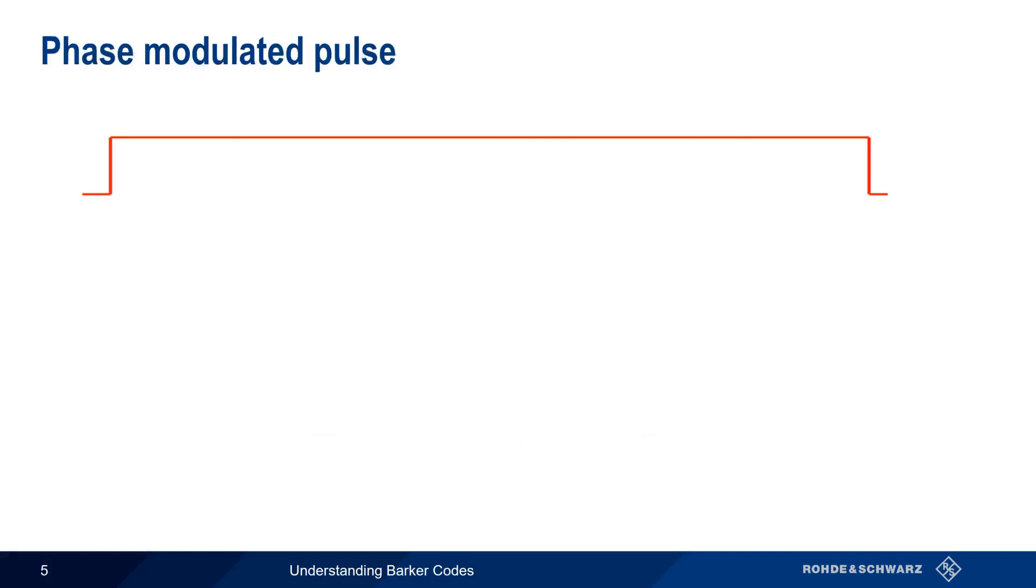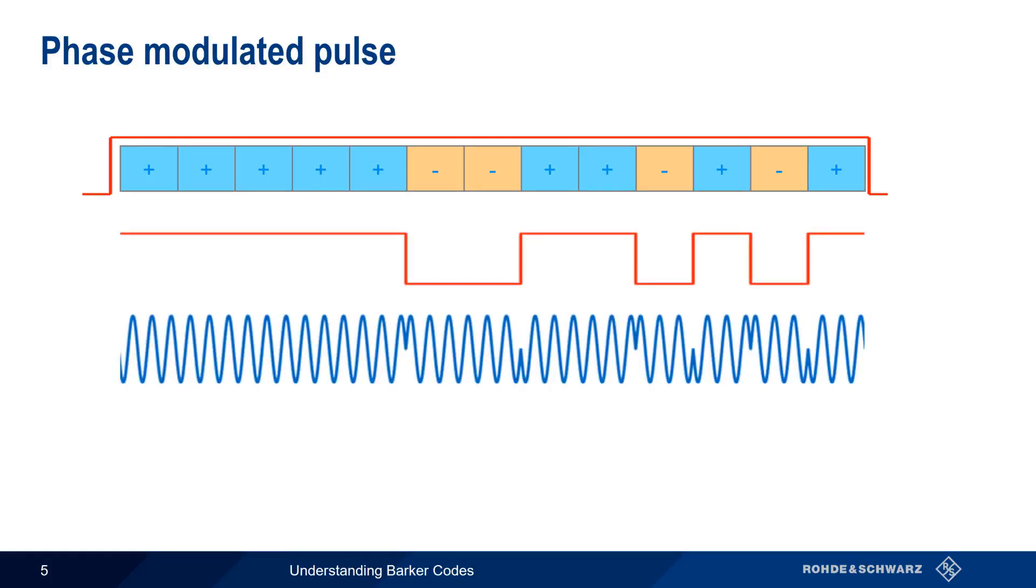In phase modulation, the phase of the signal is changed at various points during the pulse. Phase modulation is usually implemented by splitting the pulse into a series of identical width sub ranges. Each sub range is then assigned either a zero degree or 180 degree phase shift. Traditionally, a zero degree phase shift is represented by a one or a plus sign, and a 180 degree phase shift is represented by a zero or a minus sign. Note that in this example, we have only two possible phase shifts, zero and 180 degrees, so we call this a binary code. There are other phase modulation compression schemes that have more than two states, and these are called polyphase codes, but in this presentation, we'll limit our discussion to binary codes.